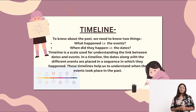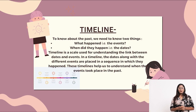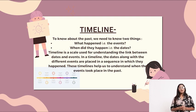A timeline is a scale used for understanding the link between dates and events. In a timeline, the dates along with the different events are placed in a sequence in which they happened. These timelines help us to understand when the events took place in the past.